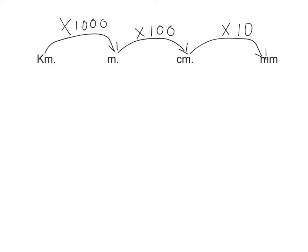If you want to do the reverse, so if you want to go from millimeters to centimeters, you need to divide by 10. From centimeters to meters, you have to divide by 100. And from meters to kilometers, you have to divide by 1000. And that's what I did. I multiplied by 100, giving me the 200 meters.